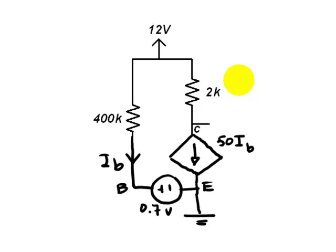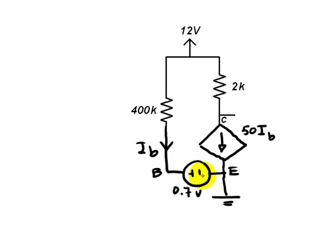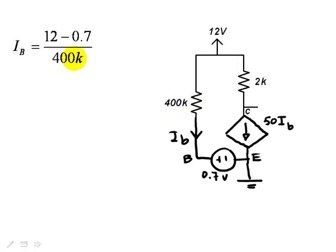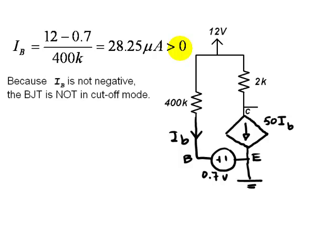Now we solve that circuit in assumed linear mode. The base current is a current in an RV branch. Voltage of the origin, 12 minus the voltage of the destination, 0 volts, minus the opposing source, 0.7 divided by the resistance, 400 kilo ohms. And that base current is 28 microamps, which is more than zero. What does it signify? That the BJT is not in cut-off mode. At least we know that, because the current in the base is not negative.